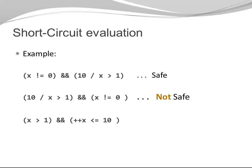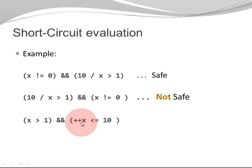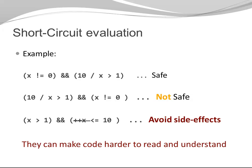Yet another example: X > 1 AND ++X <= 10. Here we have a side effect — ++X is modifying X. Don't do that. As a general rule, try to avoid side effects on the right-hand side of a conditional AND or OR operator. They make your code harder to read, more difficult to understand, and thus more error prone.